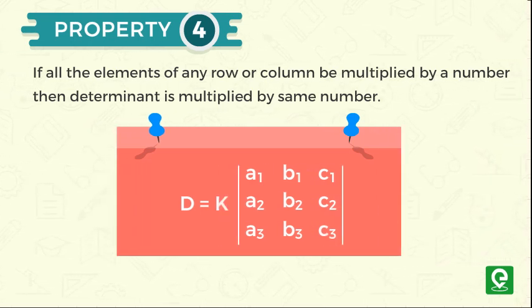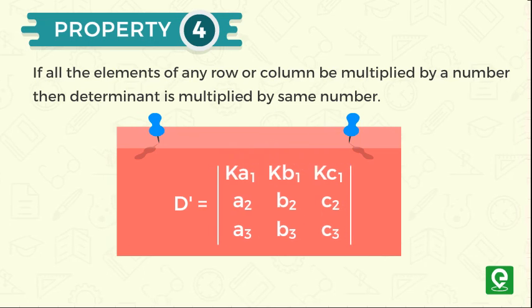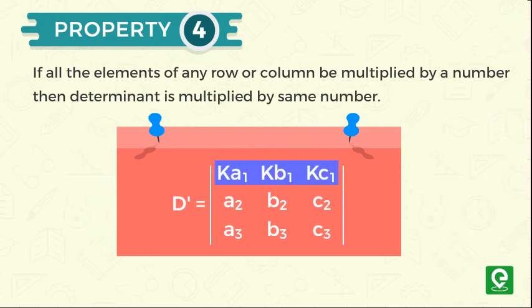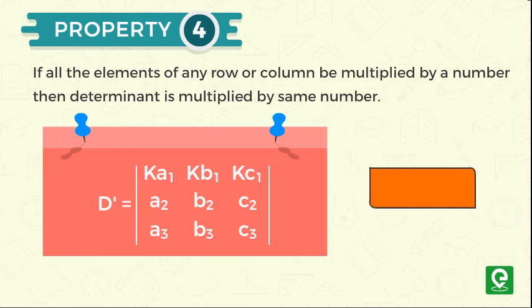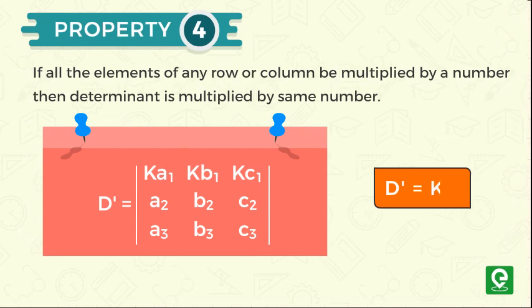And another determinant D dash is equal to k times a1, k times b1, k times c1, a2, b2, c2, a3, b3, c3. Here D dash is equal to k times D.